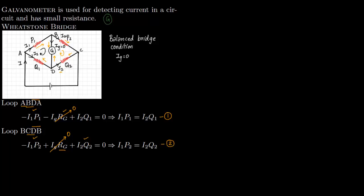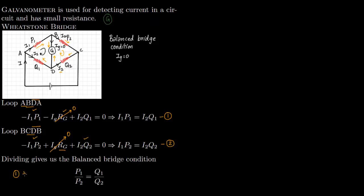Now we divide equation one by equation two. We get P1/P2 = Q1/Q2. This can also be written as P1/Q1 = P2/Q2. This is the balanced bridge condition in terms of the resistances.